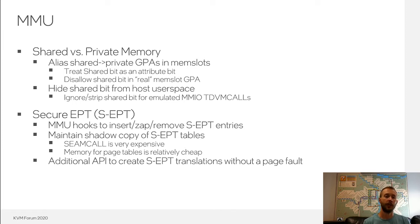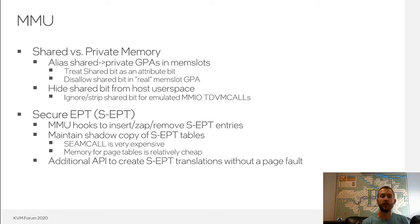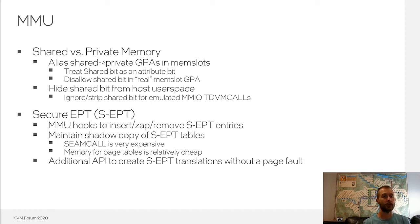For secure EPT, TDX adds several new hooks into KVM's MMU to insert, zap, and remove secure EPT entries, because the secure EPT is managed through the TDX module. Whereas traditional EPT management involves reading and writing memory directly, with TDX the secure EPT can only be managed by invoking SEAM calls to insert, zap, and remove entries. KVM still maintains a shadow copy of the secure EPT tables because SEAM call is quite expensive — if KVM invoked SEAM call to read an EPT entry for every level of an EPT walk, handling page faults would be extremely costly in latency. These shadows are used when walking the page tables; only when actually modifying an entry do we invoke the SEAM call.